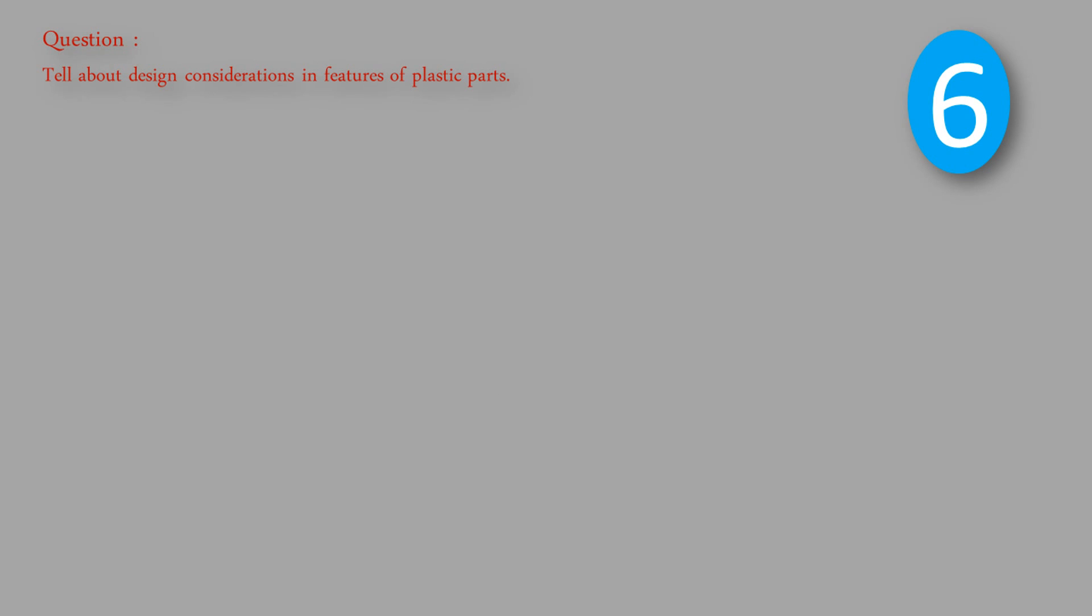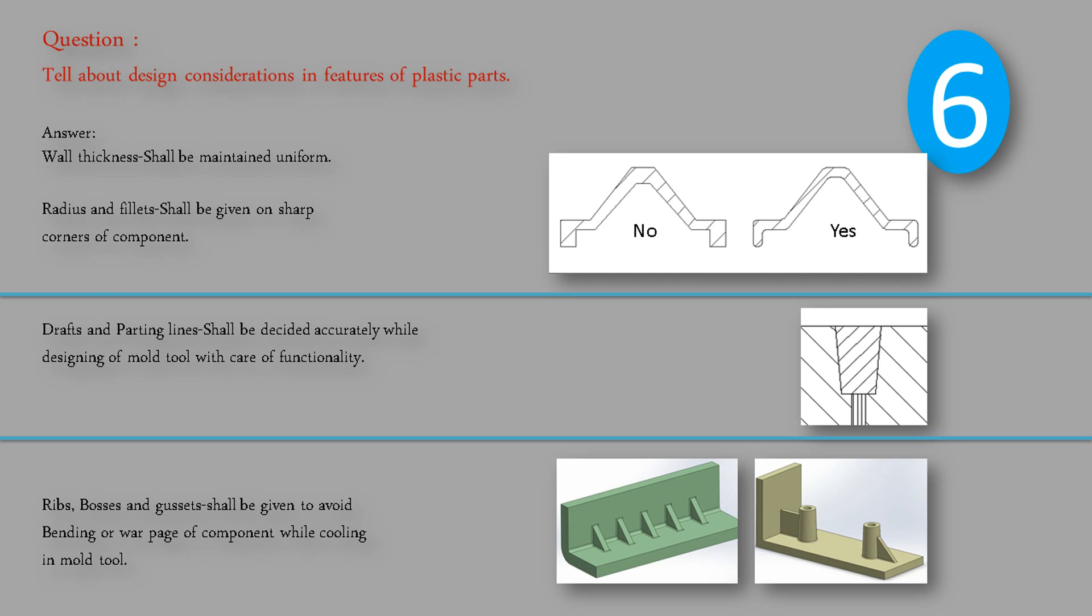Question: Tell about design considerations and features of plastic parts. Answer: Wall thickness shall be maintained uniform. Radius and fillets shall be given on sharp corners of component. Drafts and parting lines shall be decided accurately while designing of mold tool with care of functionality. Ribs, bosses, and gussets shall be given to avoid bending or warpage of component while cooling in mold tool.